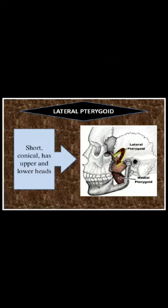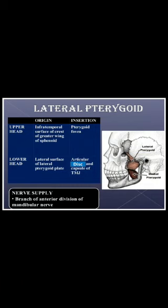The lateral pterygoid muscle is a key muscle of mastication because many structures are related to it. It is a short conical muscle with two heads — upper and lower. The upper head arises from the infratemporal surface of the crest of the greater wing of the sphenoid. The lower head arises from the lateral surface of the lateral pterygoid plate. It has a three-point insertion: the pterygoid fovea, the articular disc, and the capsule of the temporomandibular joint. It is supplied by the anterior division of the mandibular nerve.